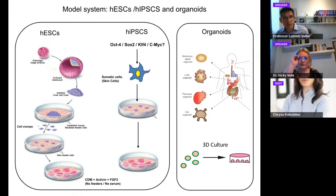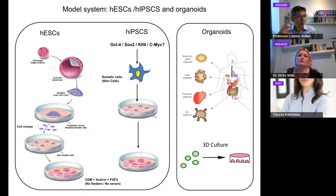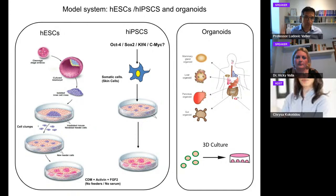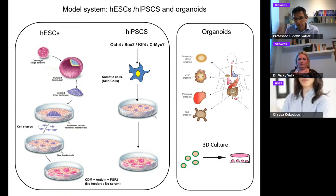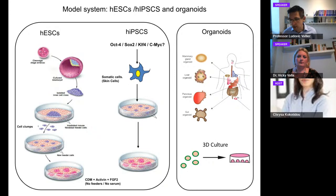Human pluripotent stem cells can be derived from two sources. The first is human embryonic stem cells (hESCs), derived from the inner cell mass of human embryos at the blastocyst stage from in vitro fertilization. Over the years we have refined this process and can now grow these cells in fully chemically defined conditions without unknown factors that could impair their use for clinical application.